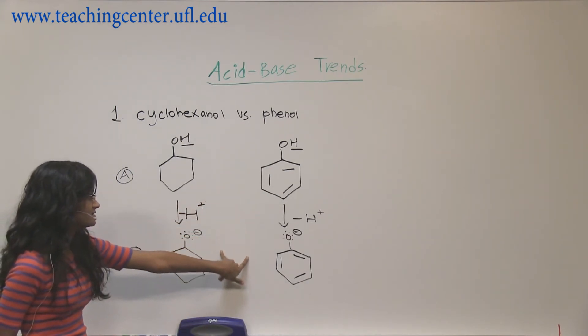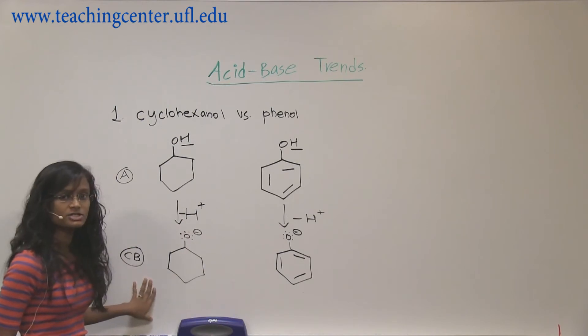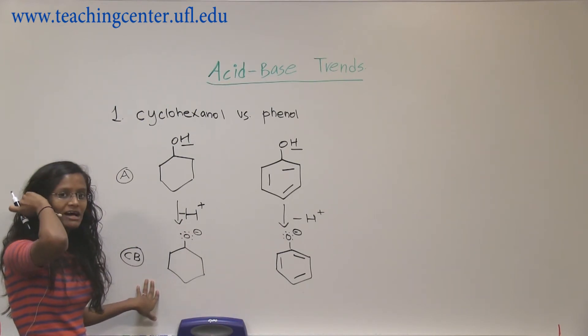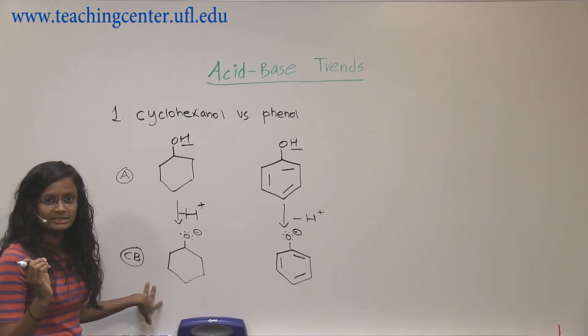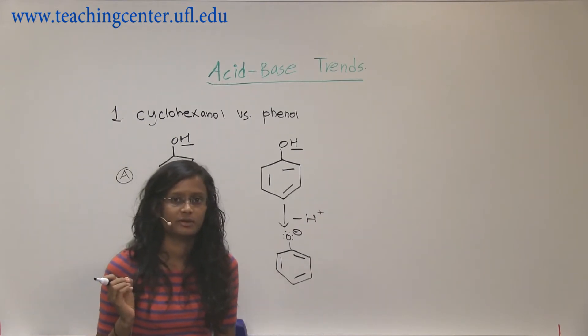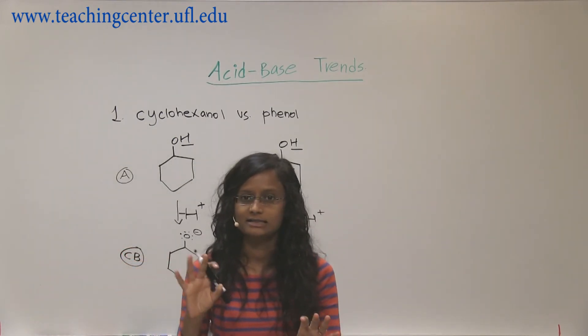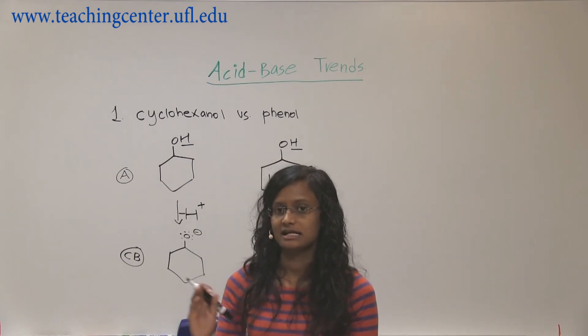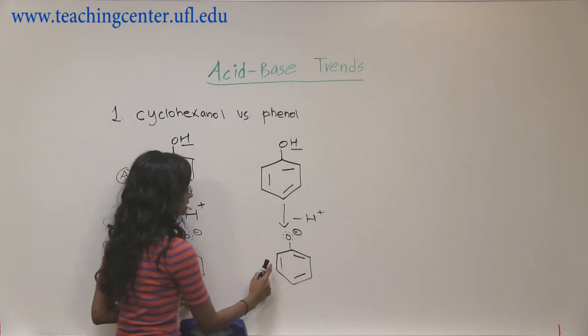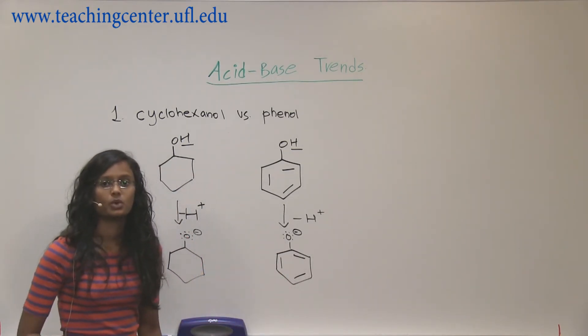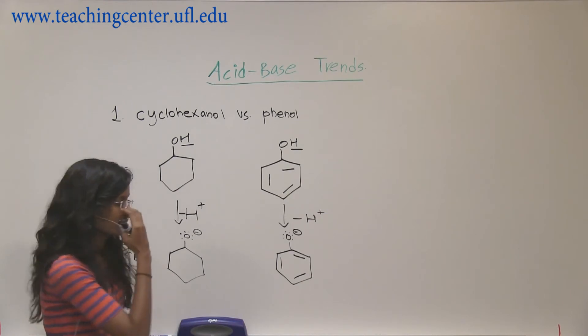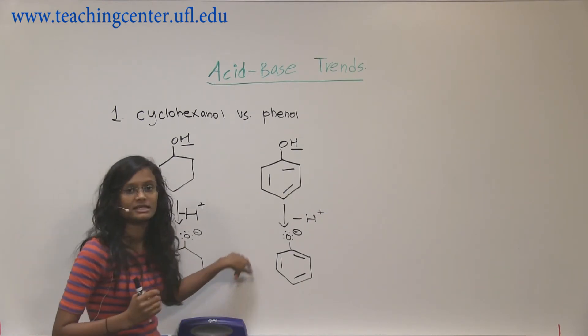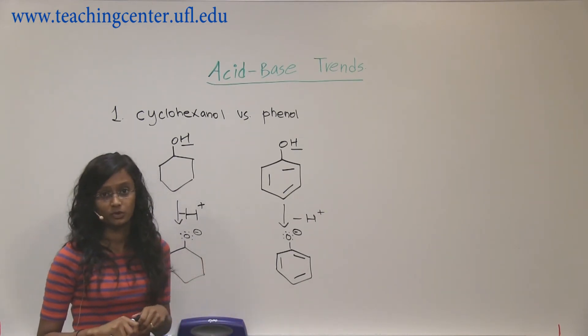Now, if we're making the change and drawing the conjugate bases, you have to find the most stable conjugate base. Again, remember the HCl and Cl example? HCl was stronger acid and Cl- was weaker base.